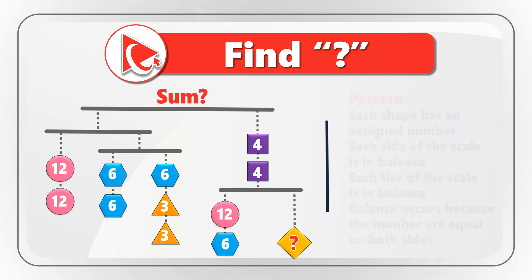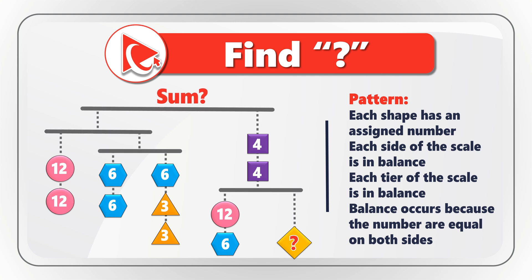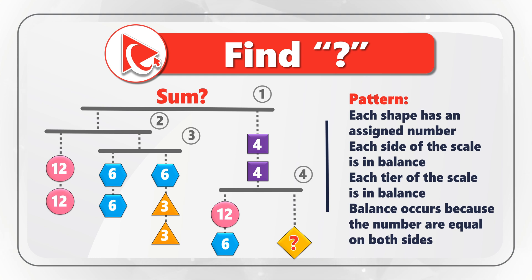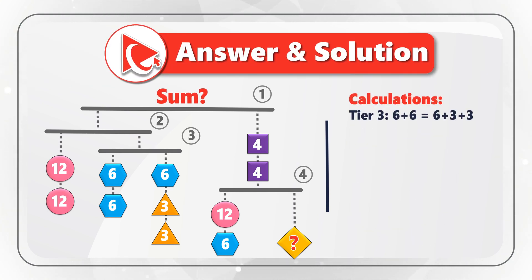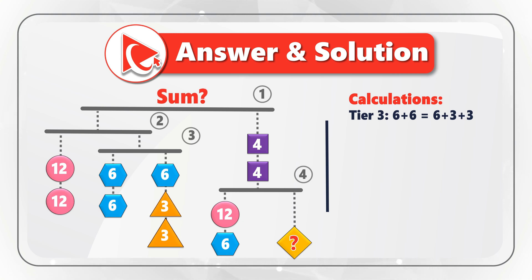To solve this challenge, let's look at the picture closely. We are presented with a multi-tier scale that has four tiers. The scale remains in balance because values on the left side and right side are equal, represented by the total of numbers inside each shape — circle has 12, hexagon has 6, triangle has 3, and square has 4. Looking at tier 3: on the left we have two hexagons with total value of 12. On the right we have one hexagon (6) plus two triangles (3 + 3), also totaling 12. This is why tier 3 remains in balance.